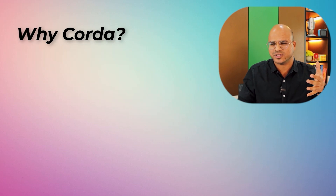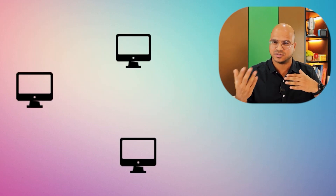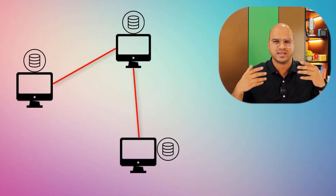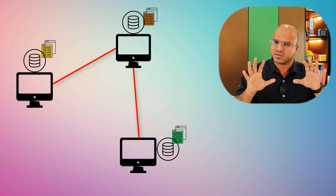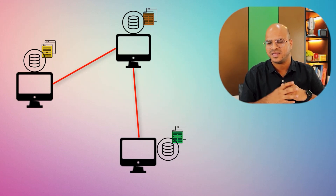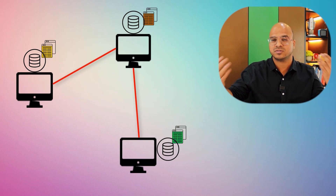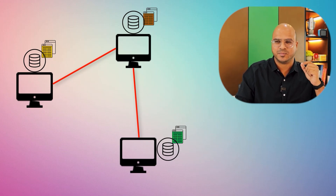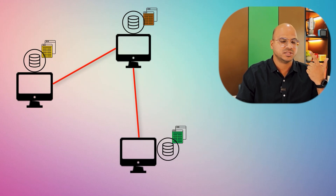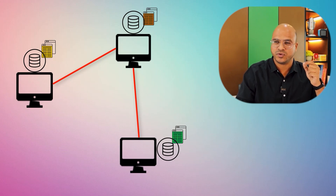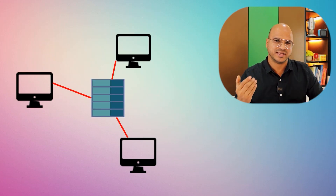So why do we need Corda? The problem is: when multiple companies work together and do transactions, they each store their own data. With three companies, each has its own database — maybe SQL Server, Oracle, or any type of database — and they have their own ledgers. Most of the time these ledgers don't match. For example, if two companies did a thousand transactions, what's the guarantee that the data in both companies is the same? There could be corruption or human error. So we want a central system — a server to store all the data.